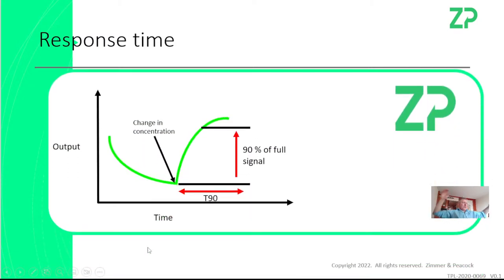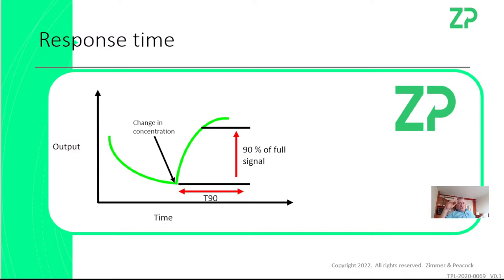Response time is really similar to settling time. I'm at baseline, I add an analyte at a known concentration, there's a rising signal, and it's just really the response time. Again, T90 is the time it takes to get within 90% of the signal — there's a final plateau which is the last 10%, but sometimes reaching plateau can take a really long time. You're really just interested in what it takes to get within 10% of the plateau — that's your T90 time.